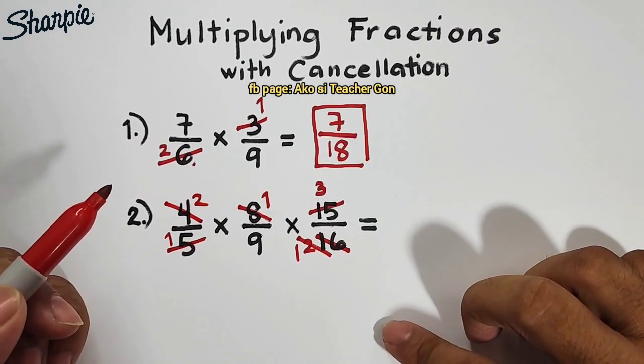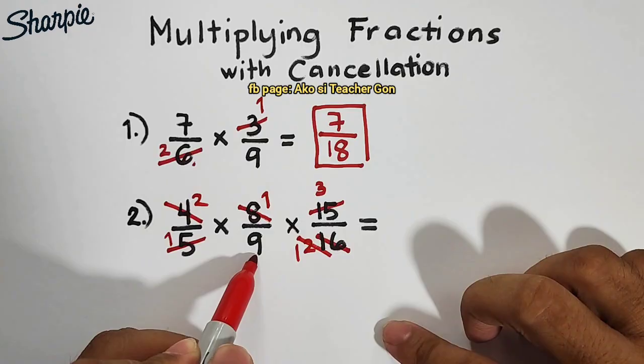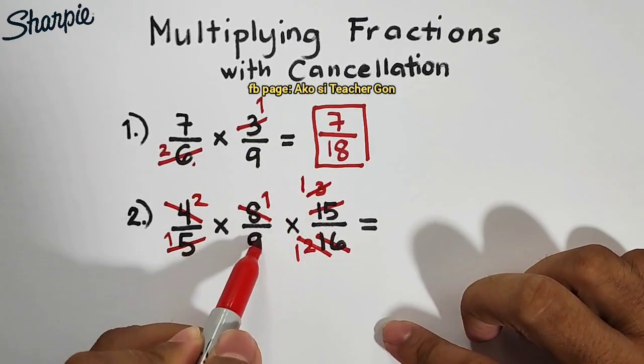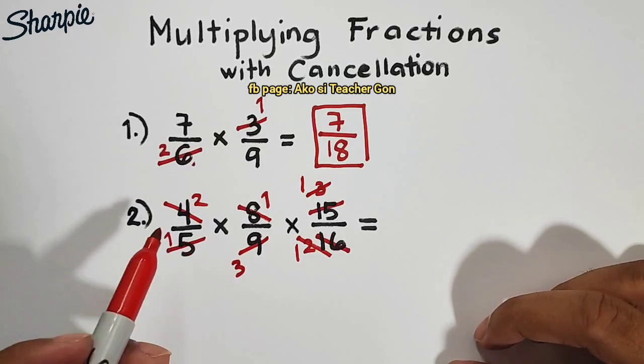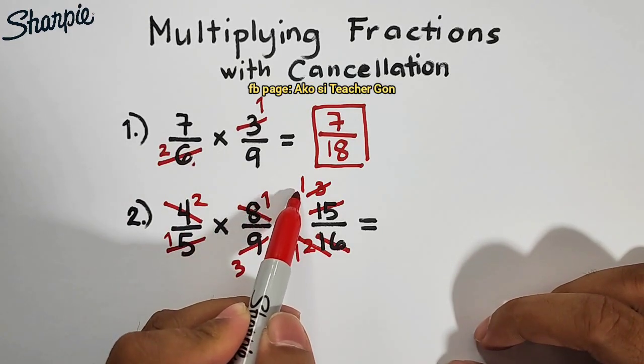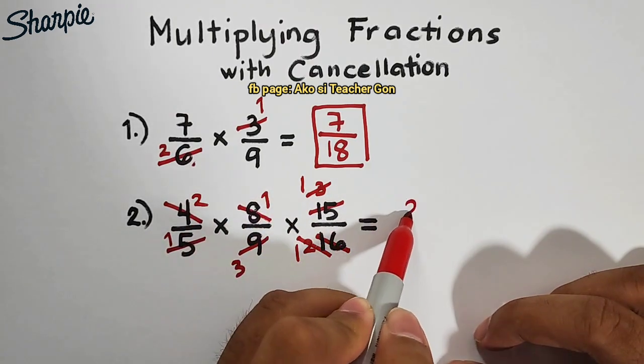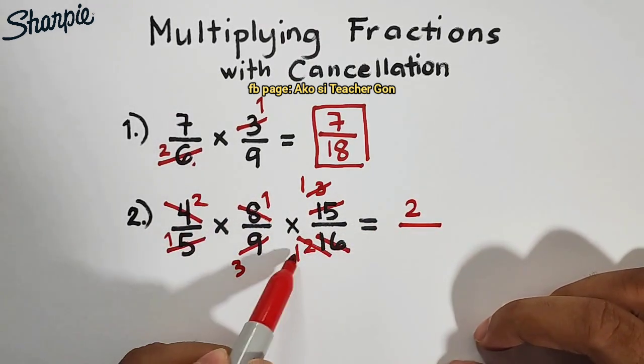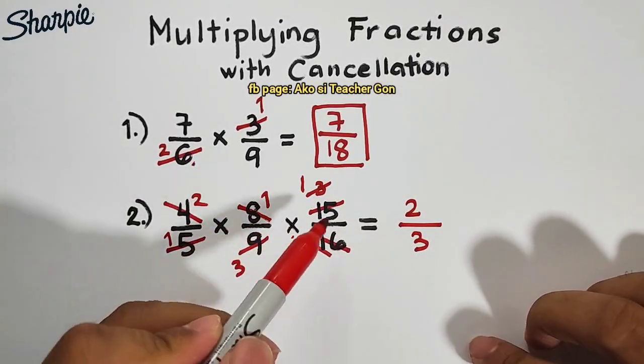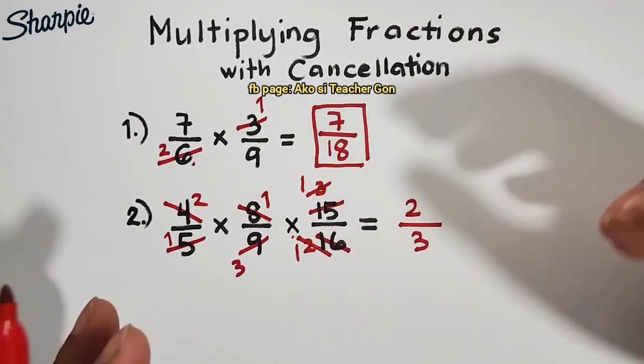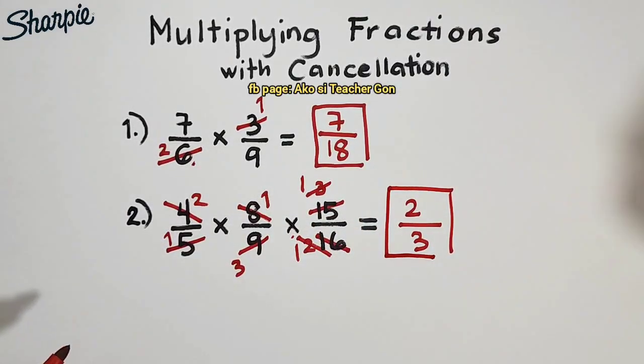And then, this 3 of ours, we can still cancel out 3 by 9. Cancel this. It becomes 1. This becomes 3. So, as you can see, here are the numbers. What we have now is 2 times 1 times 1. Again, let me repeat this. 2 times 1 times 1, which is equal to 2. All over, 1 times 3 times 1, which is equal to 3. So, in multiplying 4 over 5 times 8 over 9 times 15 over 16, using cancellation method, what we have here is 2 over 3 as our final answer.